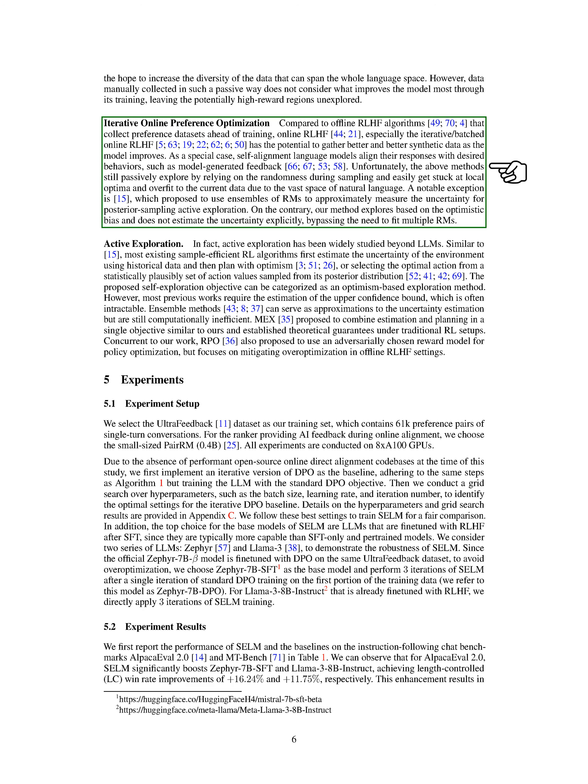Synthetic data has been used to align language models with user intentions. Synthetic datasets can be generated by considering target outputs as instruction-following responses or distilling high-quality data from strong models to fine-tune weaker ones. Compared to offline preference optimization algorithms, online preference optimization, especially iterative or batched approaches, can gather better synthetic data as the model improves. Our method explores optimistically without explicitly estimating uncertainty, avoiding the need for fitting multiple reference models.